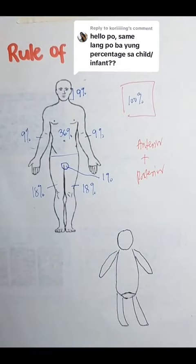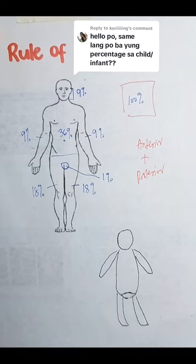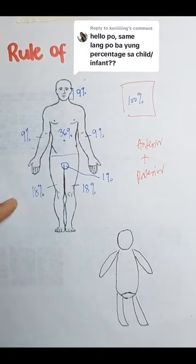Hi, fellow feature RN. So, the rule of nines used for adults with burn injuries is different from the one that we use for children, mainly because of the difference in body proportions. Siyempre, mag-iba ng size ng body proportion ng ating adults and children.